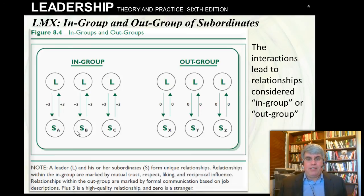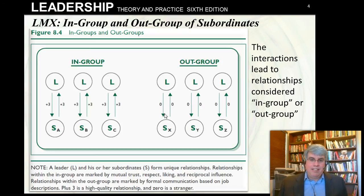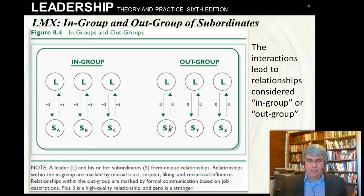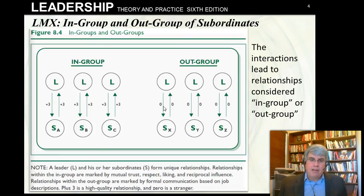However, there are other subordinates — X, Y, and Z — where things don't go as well. The leader and subordinate have neutral interactions; the leader does what he or she has to do, and the subordinate responds with what he or she has to do. There's no real mutual benefit going on. Things are defined by the contract that exists between them, represented as zeros — neutral interactions.